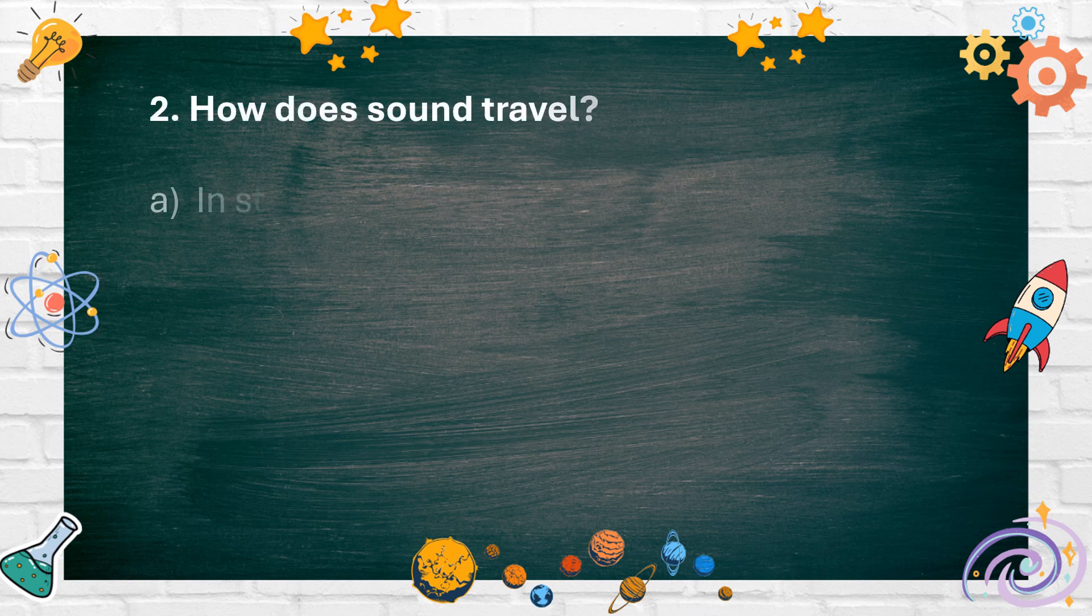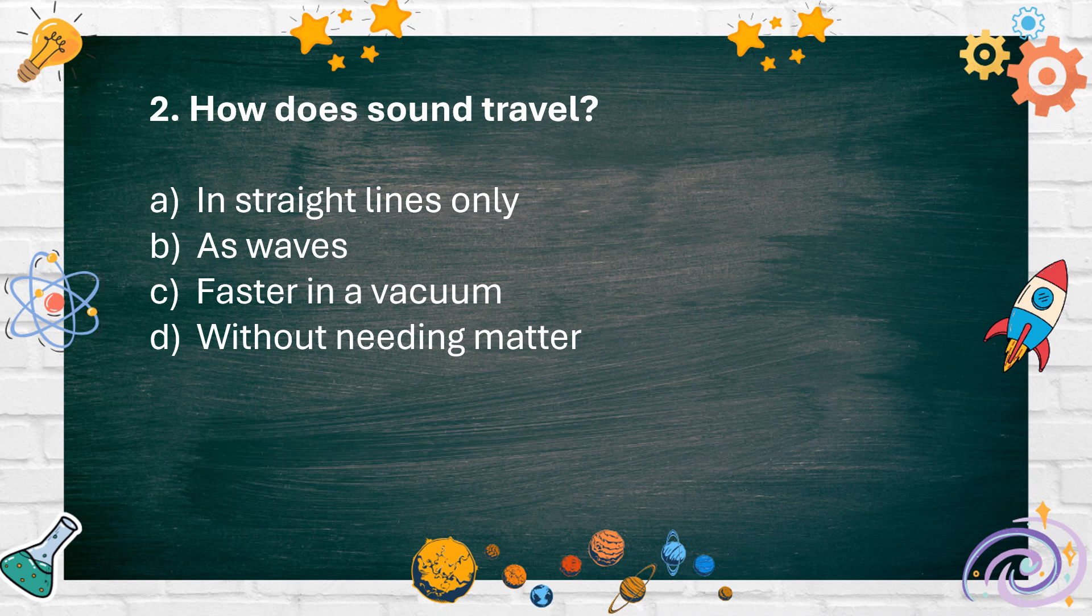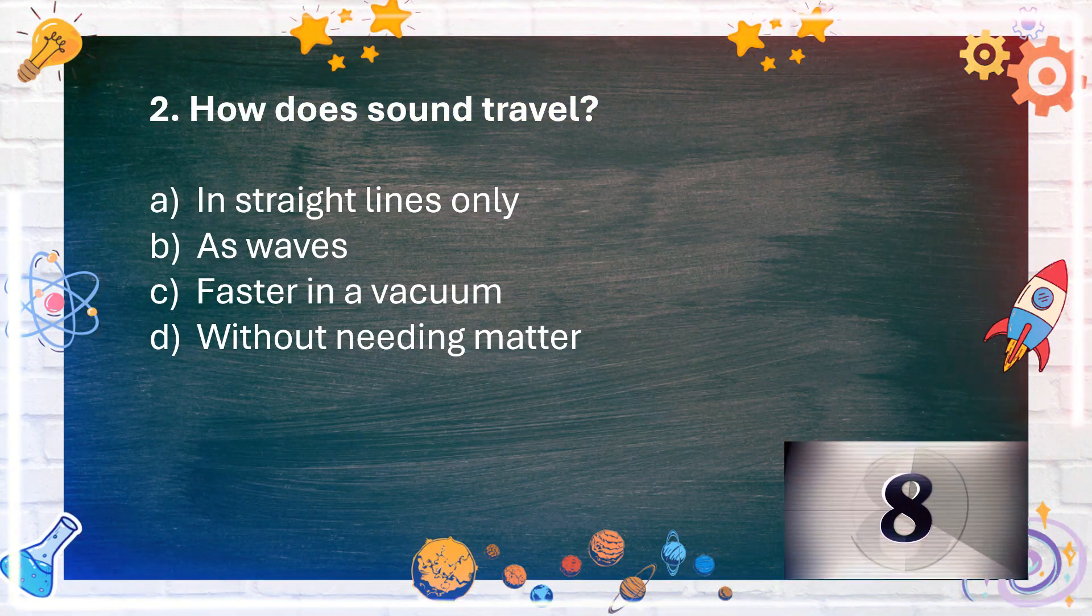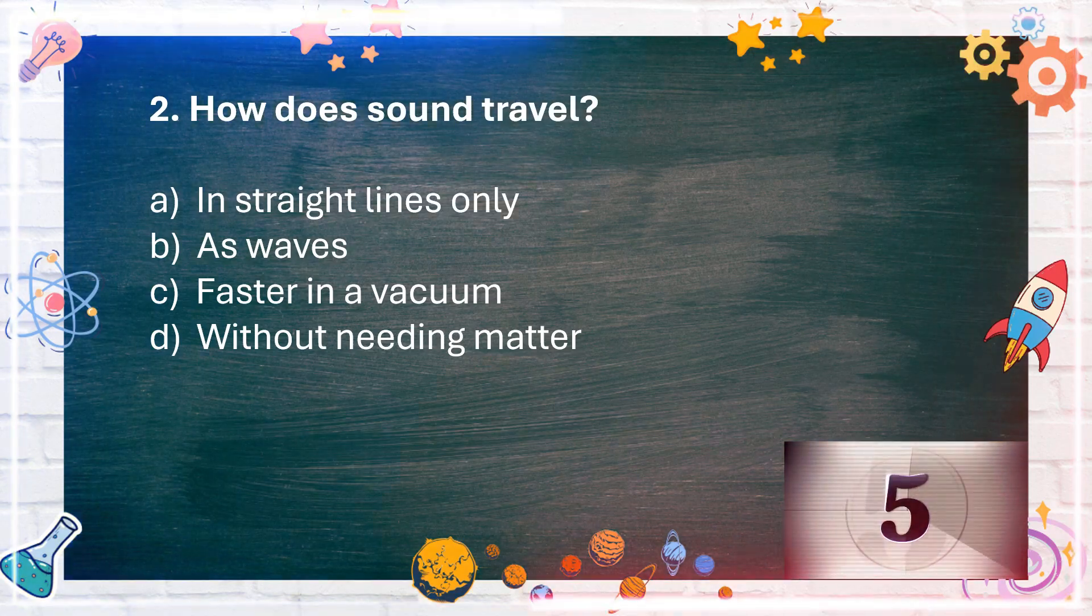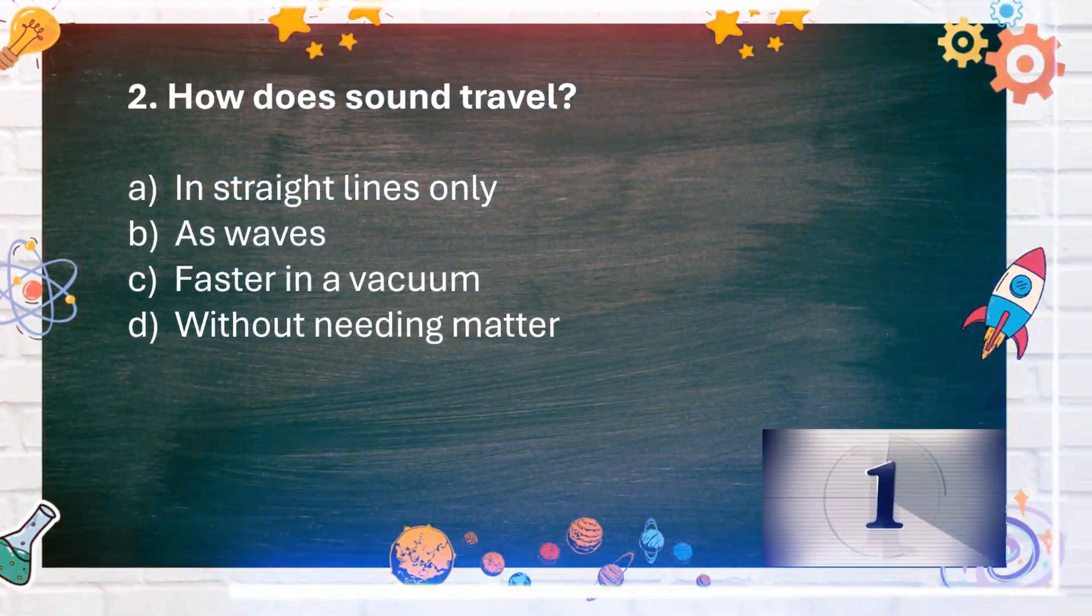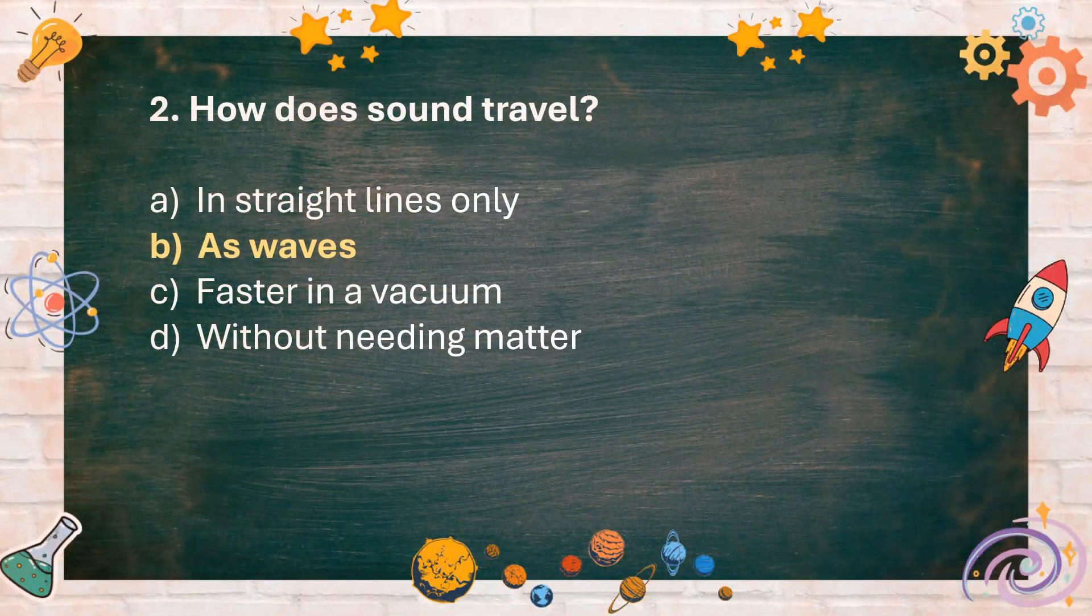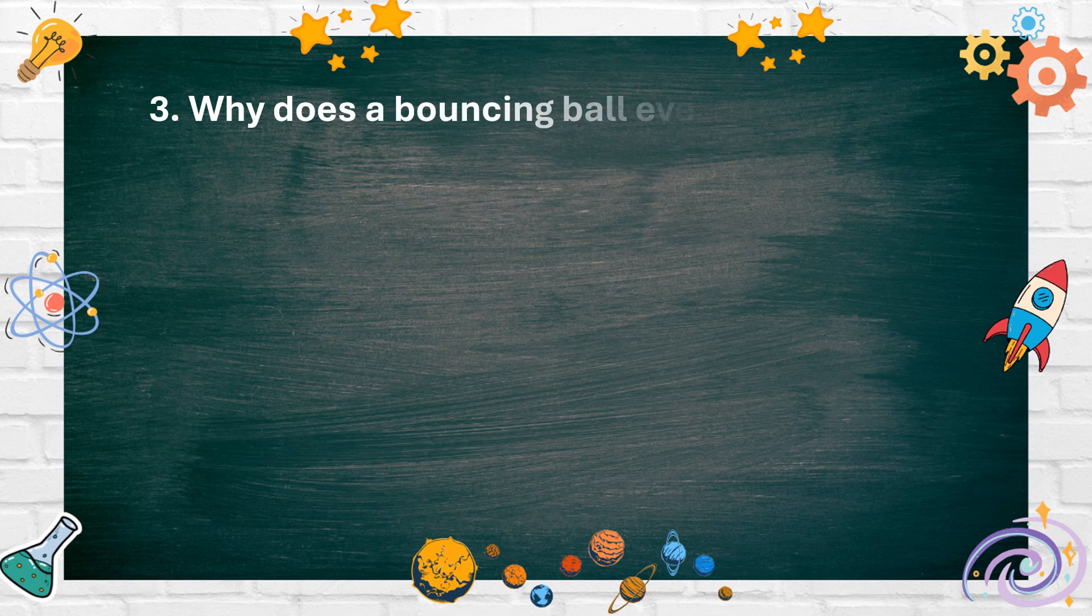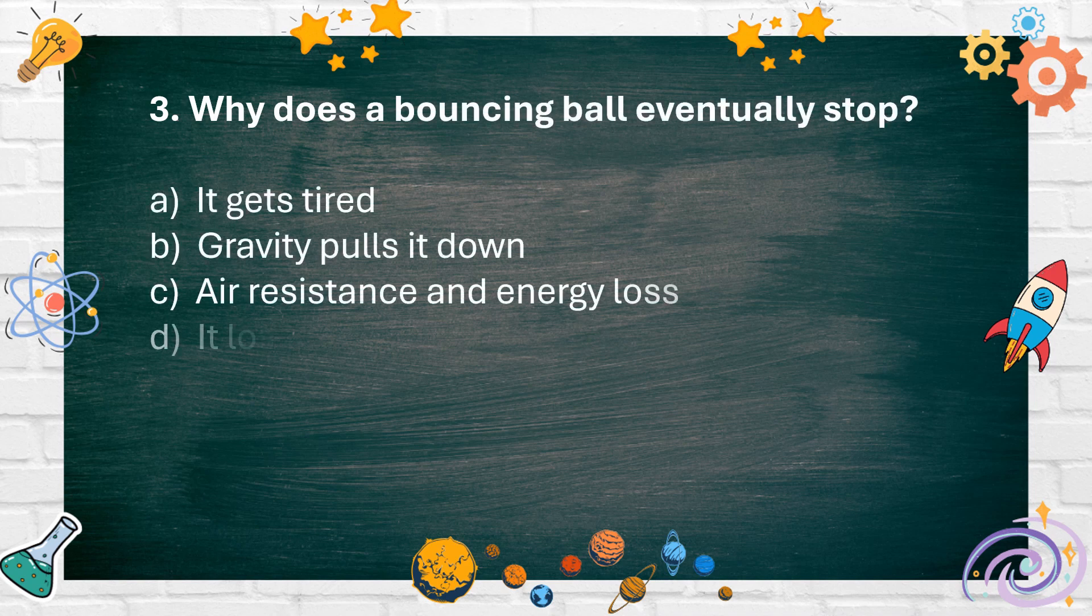Number 2: How does sound travel? A. In straight lines only. B. As waves. C. Faster in a vacuum. D. Without needing matter. The answer is B. As waves.